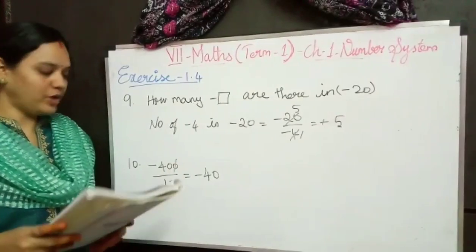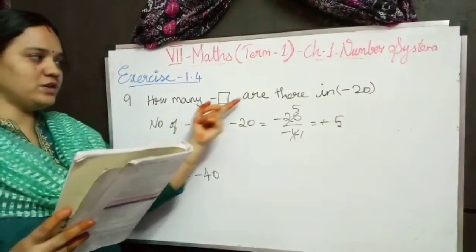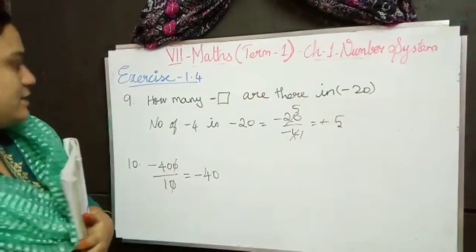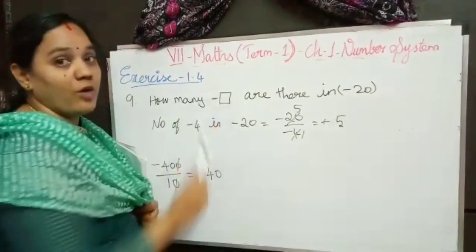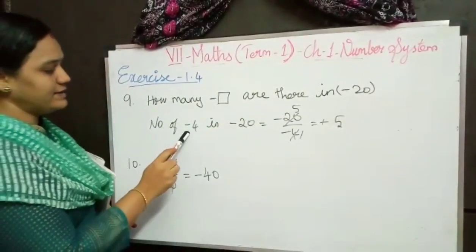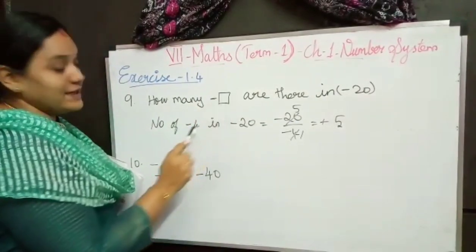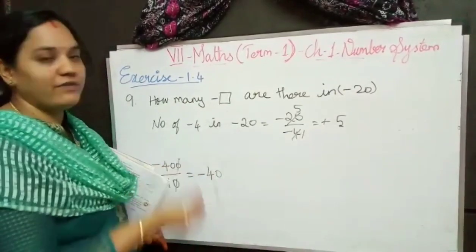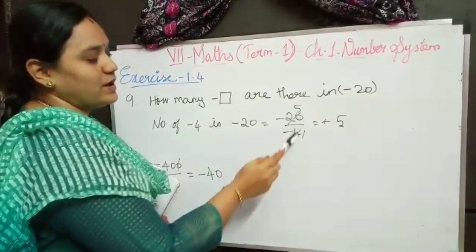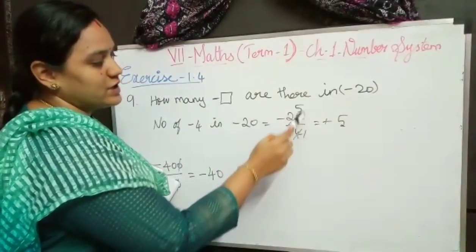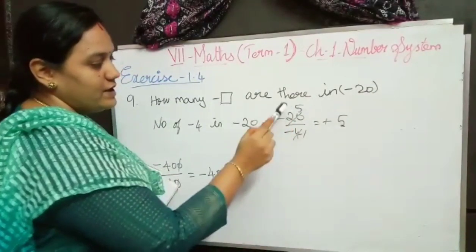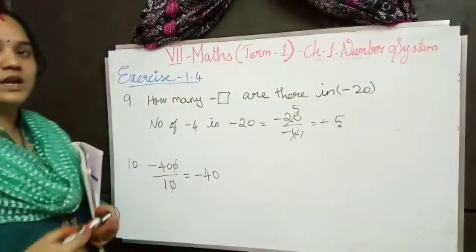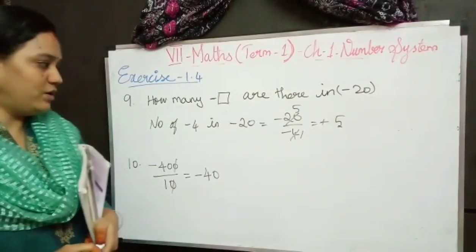Ninth problem: how many boxes are there in minus 20? The square box has 4 sides, so we find how many minus 4s are in minus 20 by dividing: minus 20 divided by minus 4. 5 fours are 20, same sign so plus 5. There are 5 boxes in minus 20.